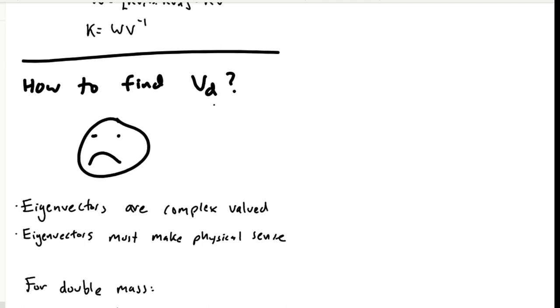And as I said, they have to correspond to some physically meaningful systems, so you can't have eigenvectors, for example, that separate the velocity and position terms for a given mass in a double-mass spring damper system. It's not physically possible.